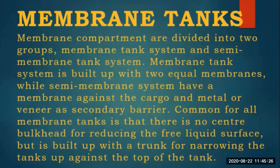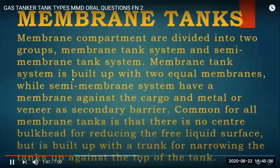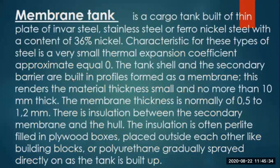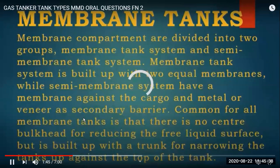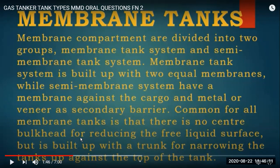A membrane tank has two equal membranes - two equal membranes outside. A semi-membrane has only a membrane against the cargo - a single membrane - with metal as a secondary barrier. It is common for all membrane tanks that there is no center bulkhead, to reduce the free liquid surface effect, and the tank is built up with a trunk for narrowing the tank at the top.